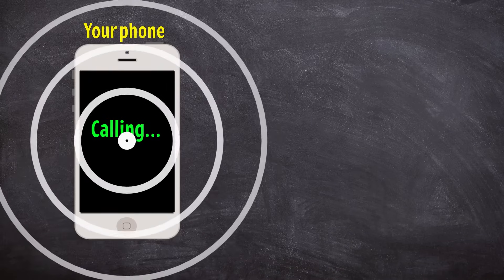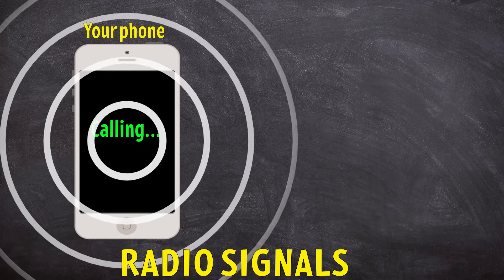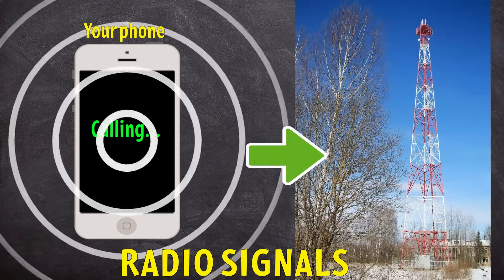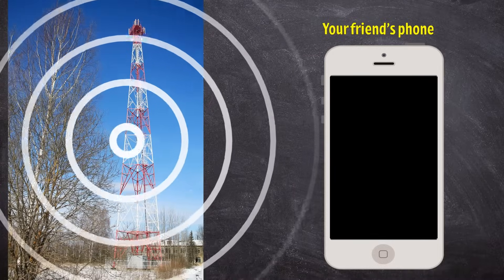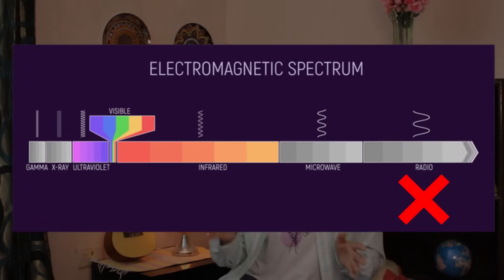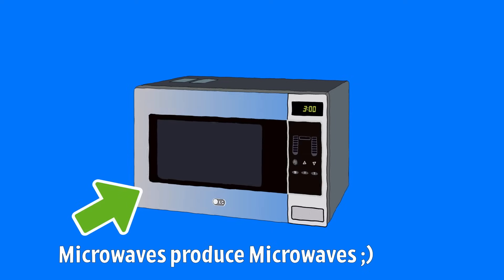So whenever you call a friend, your phone emits radio signals which first go to a station and then to your friend, which are perceived as a call. In a similar way, Wi-Fi connections work — but they're not radio waves; instead, they are microwaves. Yes, those microwaves.